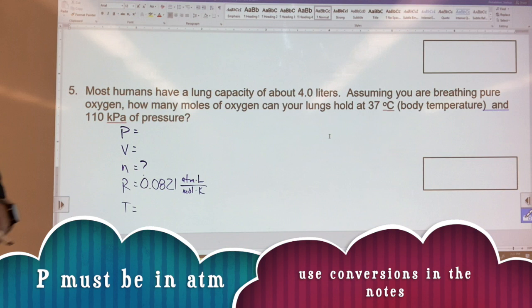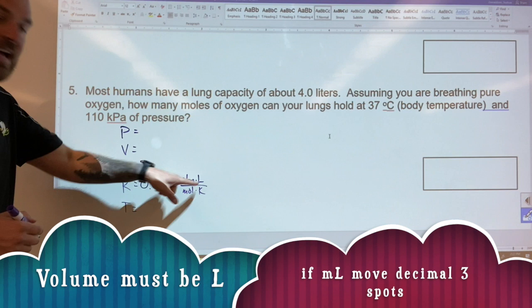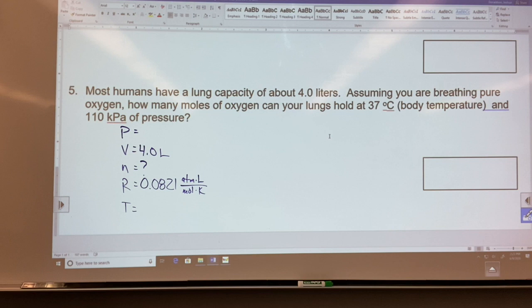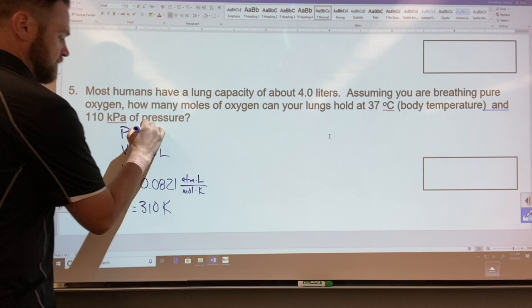So as I go through this question, I read that your lungs have the capacity to hold four liters, well that's exactly the unit I want for volume, so 4.0 liters. Assuming that you breathe pure oxygen, how many moles? Okay. 37 degrees Celsius, so we're gonna take 37 and we're gonna add 273 to that, and that gives us a grand total of 310 kelvin. 110 kilopascals, so 110 kPa.